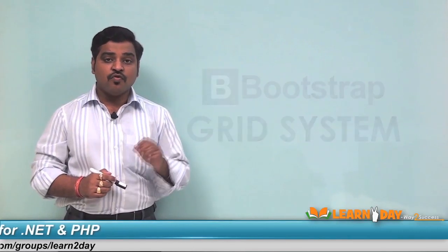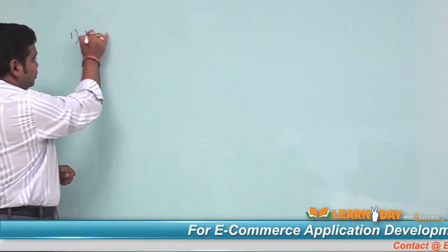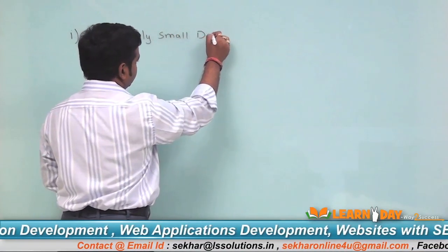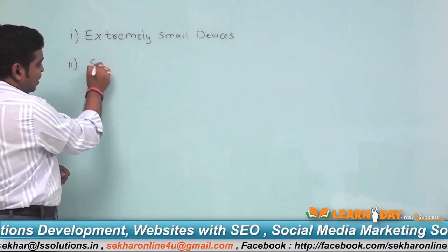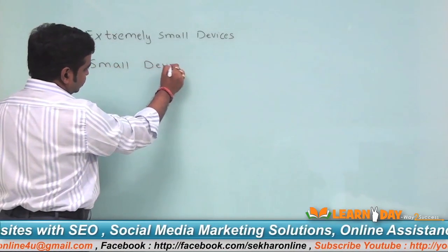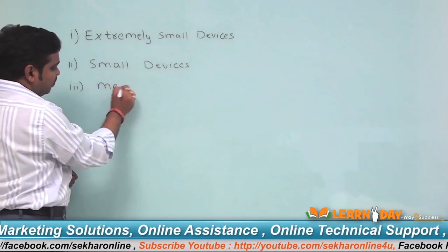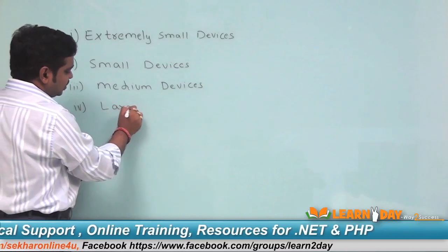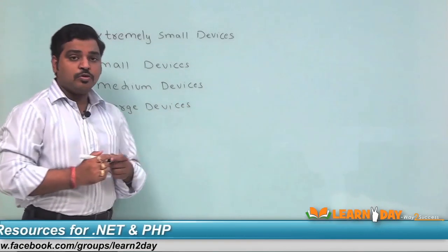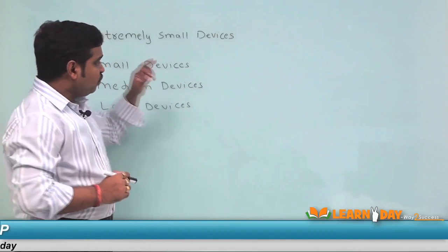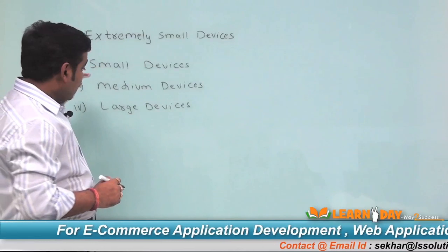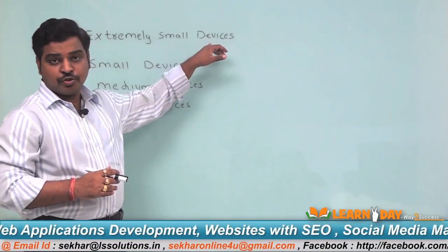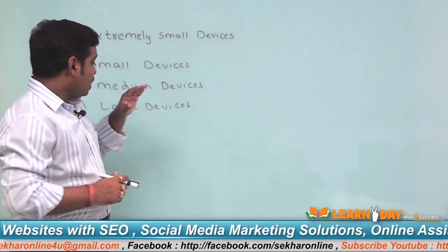When we try to understand Bootstrap, it categorizes devices into four categories: first, extremely small devices; small devices; medium devices; and large devices.